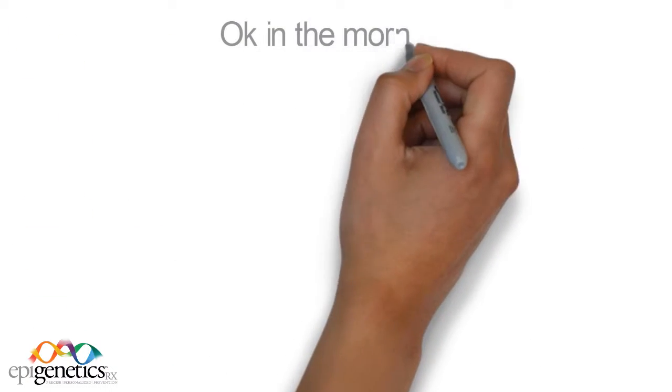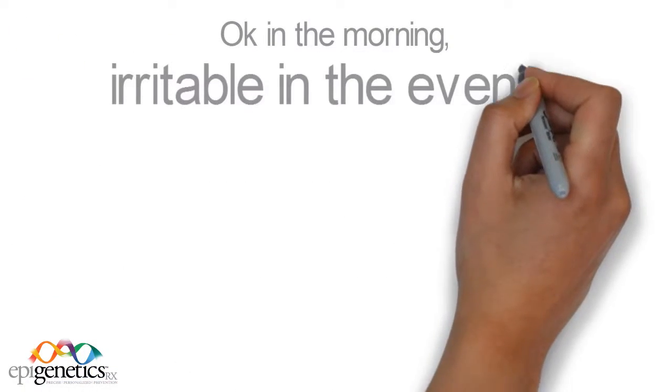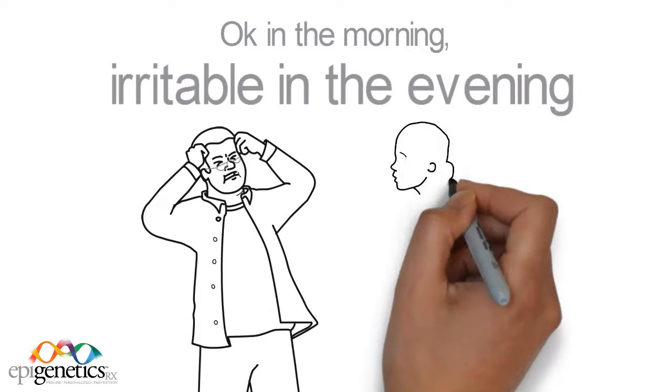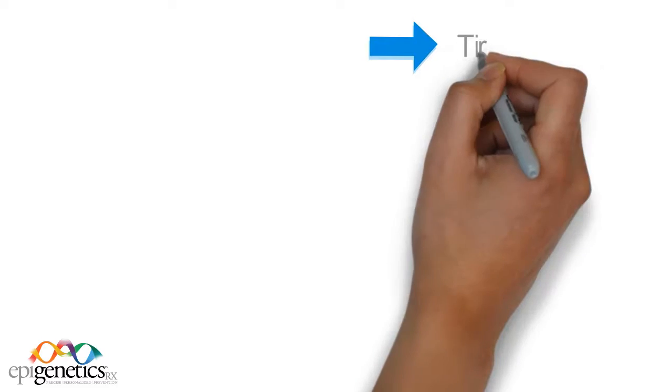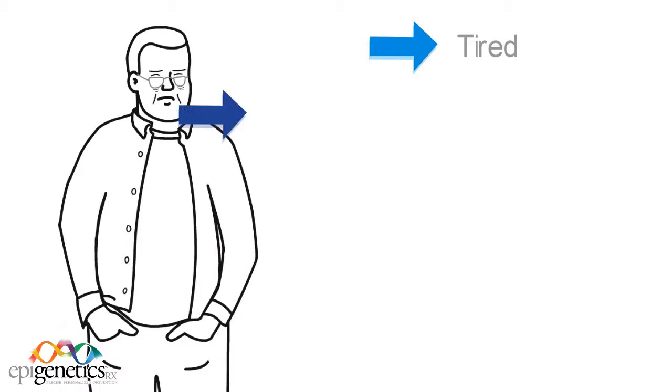Gus felt fine in the morning, but by the afternoon he was agitated, irritable, bloated, and gutty. Worst part, Gus felt tired all the time and complained of not being able to fall asleep.